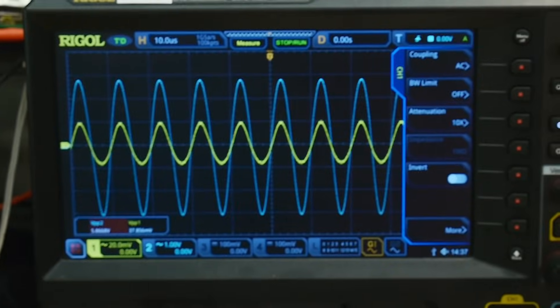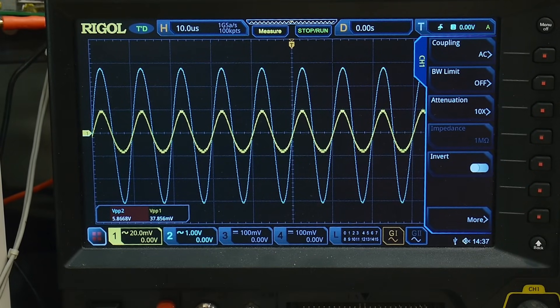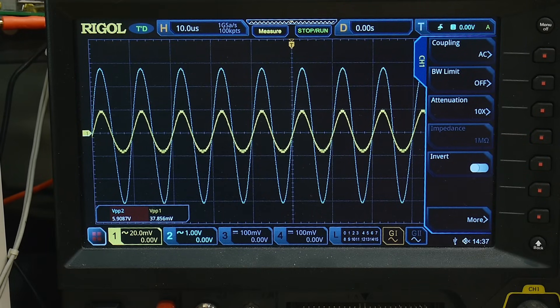I don't think I've done a lecture on cascode configuration amplifiers. A cascode uses a common base amplifier inside of it, but that's for a different video.